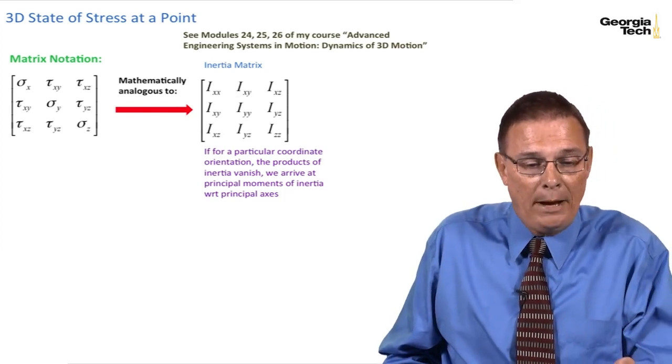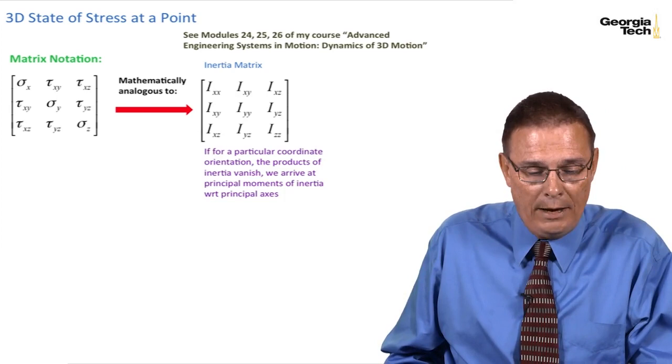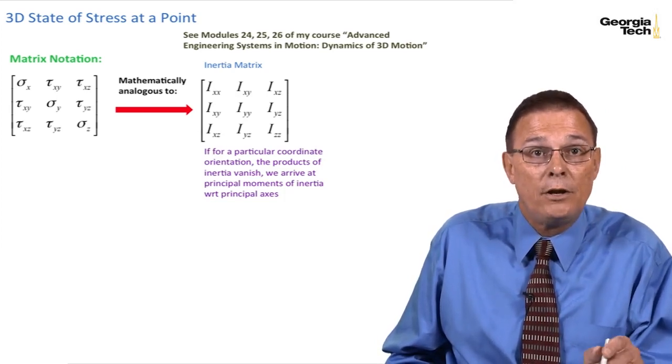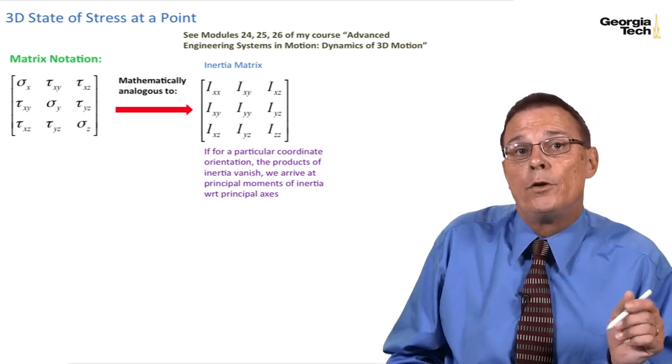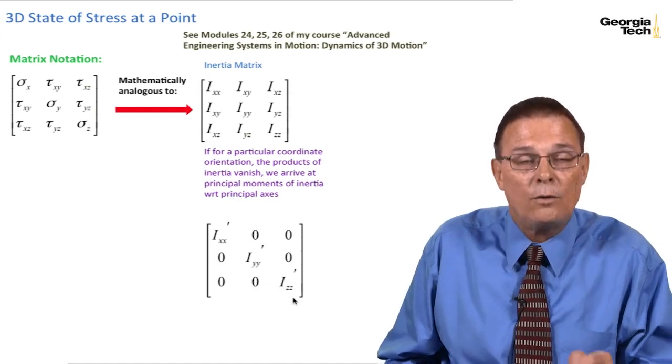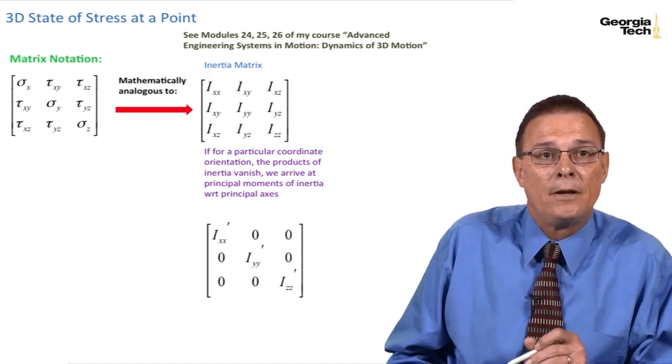And if you recall back and you look back at these earlier modules, you noticed we found that for a particular coordinate orientation, the products of inertia would vanish, and we arrived at what we called the principal moments of inertia with respect to principal axis, and that matrix looked like this.